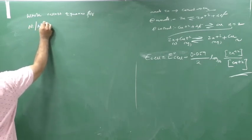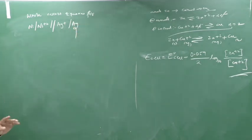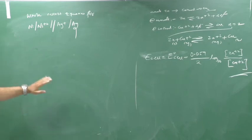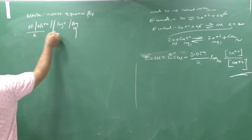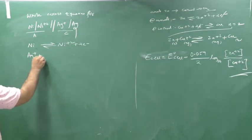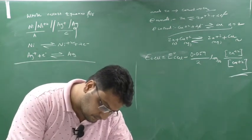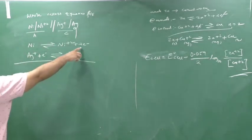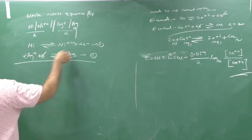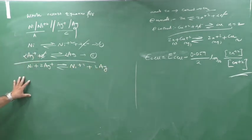Now write the Nernst equation for the cell: Ni | Ni²⁺ || Ag⁺ | Ag. At anode: Ni → Ni²⁺ + 2e⁻. At cathode: Ag⁺ + e⁻ → Ag. To balance electrons, multiply the cathode reaction by 2: 2Ag⁺ + 2e⁻ → 2Ag. Net reaction: Ni + 2Ag⁺ → Ni²⁺ + 2Ag. Number of electrons transferred n = 2.